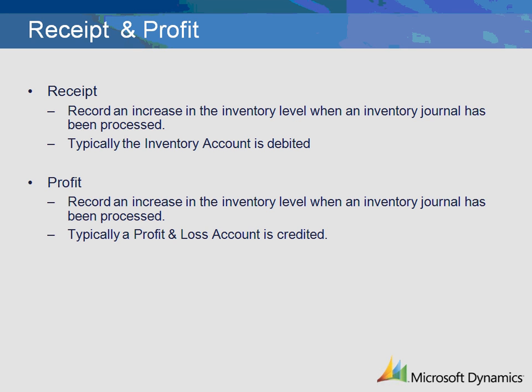The receipt transaction is the setup related to the recording of an inventory transaction where an inventory journal has been processed and where the inventory quantity is increased. The profit transaction is the setup related to the recording of such an inventory transaction as well, and serves as the offset to the receipt transaction. The Ledger account for the profit transaction is typically a profit and loss type account that will be credited at the time of the inventory journal posting.